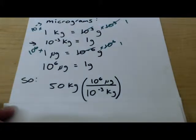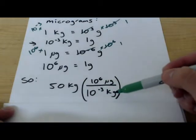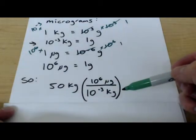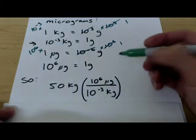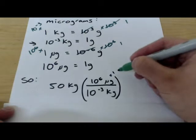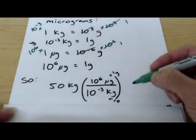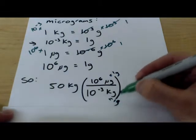So we take fifty kilograms and multiply it by ten to the six micrograms over ten to the negative third kilograms. Now why did we do that? This is equal to one gram. This ten to the six micrograms equals one gram. Ten to the third kilograms also equals one gram. So what we're doing here is, again, setting up just a value that's totally equal to one.